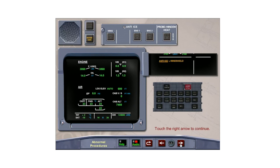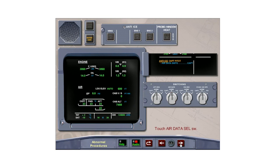Overheating of a windshield or failure of the associated sensor causes the windshield fault; crew awareness is required. If probe or static port heating is faulty, its associated fault will be triggered. With the Captain's pitot heat fault, the crew action is to switch the air data selector to Captain on 3, which will supply air data from the air data inertial reference unit 3 and the standby probes. Touch the air data selector to transfer the Captain to air data inertial reference unit number 3.